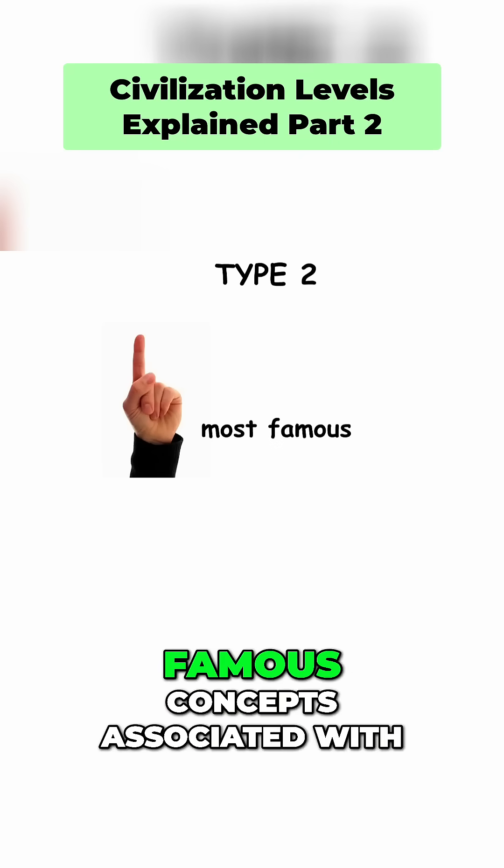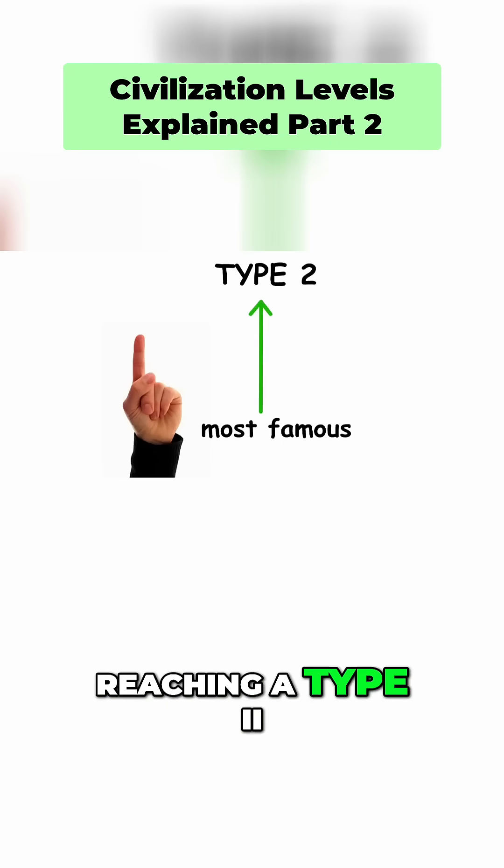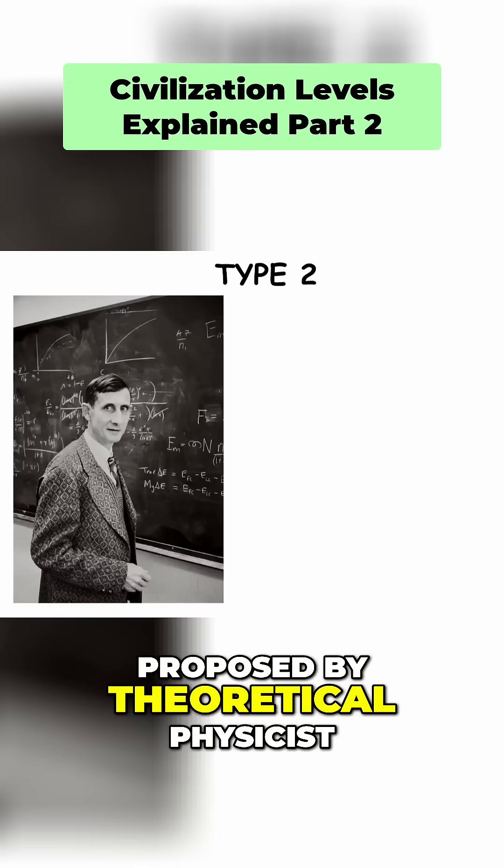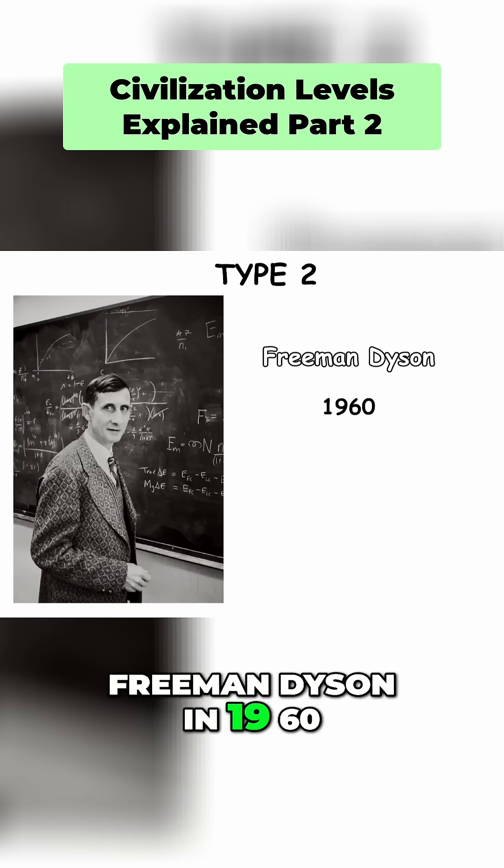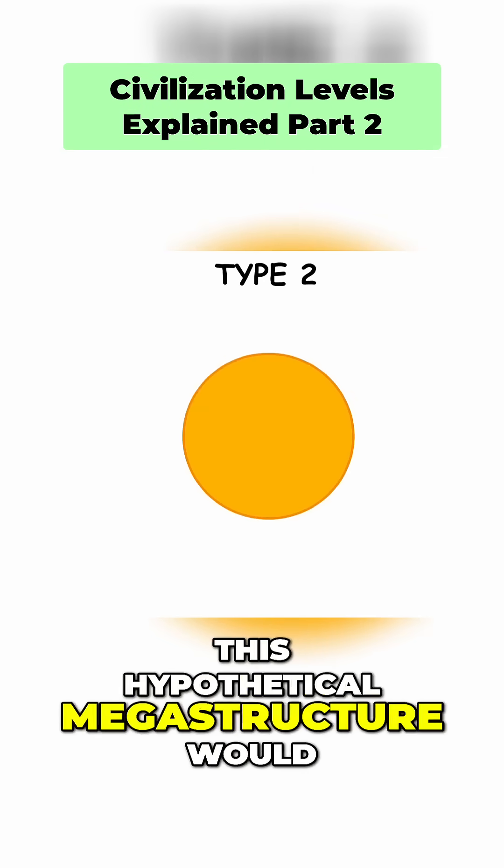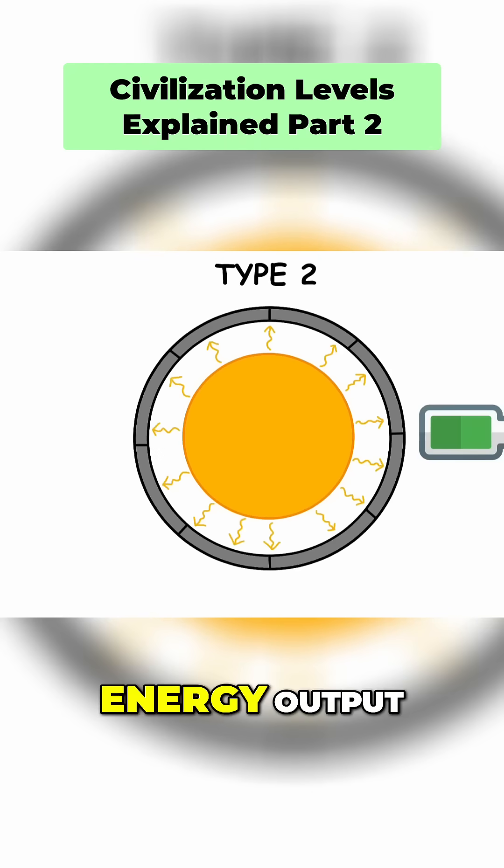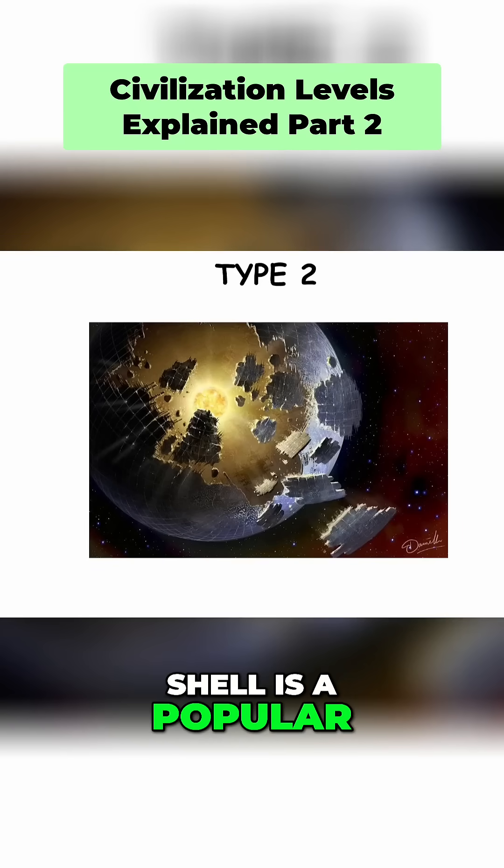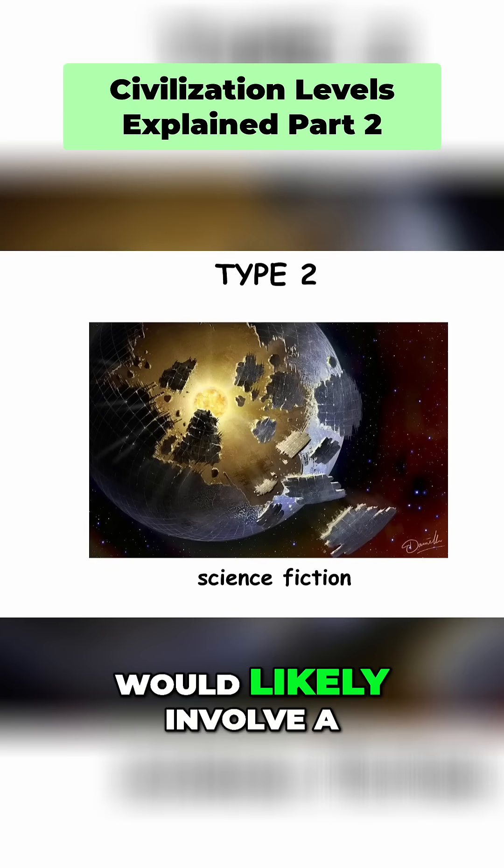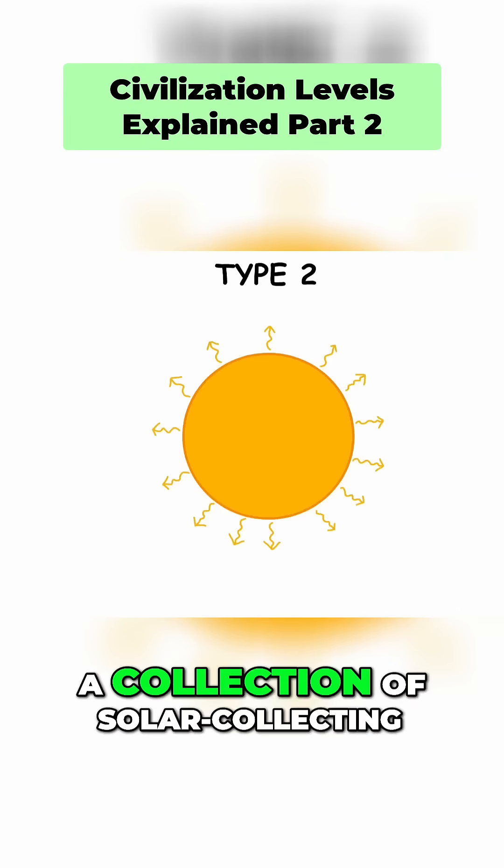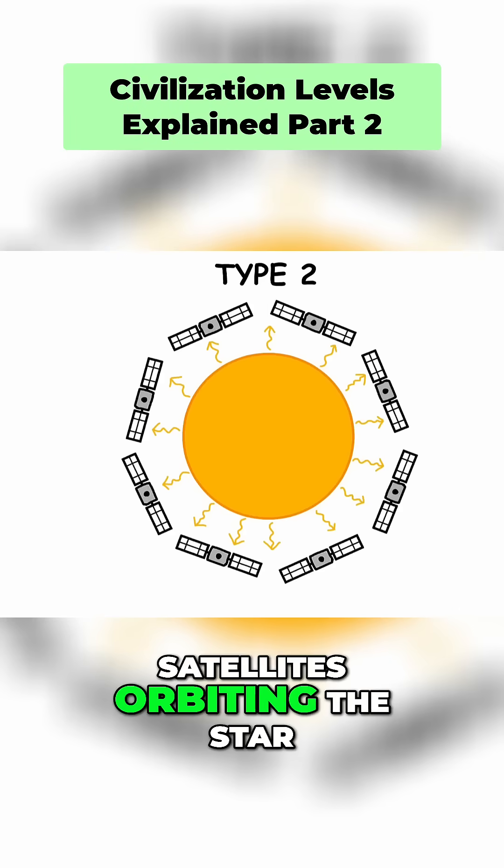One of the most famous concepts associated with reaching a Type 2 civilization is the Dyson Sphere, proposed by theoretical physicist Freeman Dyson in 1960. This hypothetical megastructure would be built around a star to capture most or all of its energy output, and while a solid shell is a popular science fiction idea, a more practical approach would likely involve a Dyson Swarm, a collection of solar-collecting satellites orbiting the star.